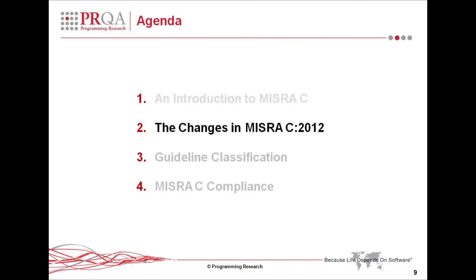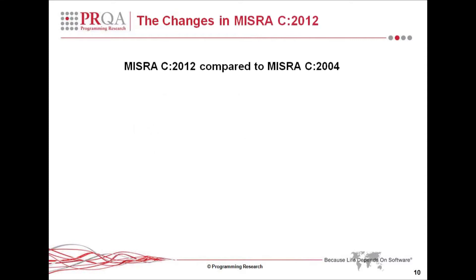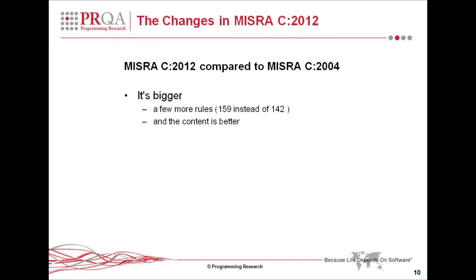What has changed in MISRA C 2012? What are the things that have changed in the whole establishment of guidelines and in the environment? I want to just survey the major changes without going into too much detail. The first thing you will notice if you acquire a new copy of the MISRA 2012 standard — if you're familiar with the previous 2004 version — you'll notice it's bigger. There are 159 rules instead of 142, but the main reason for the increase in size is probably not the increase in the number of rules.